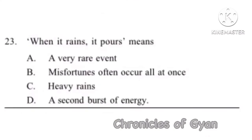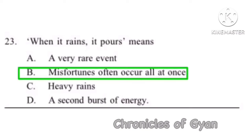Question 23: 'When it rains, it pours' means? The correct answer is Option B, misfortunes often occur all at once.